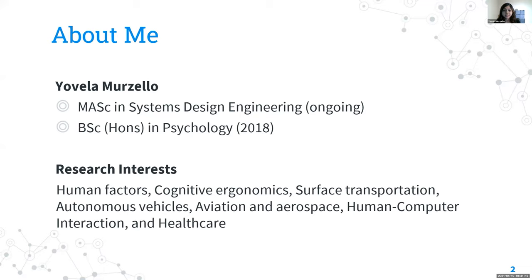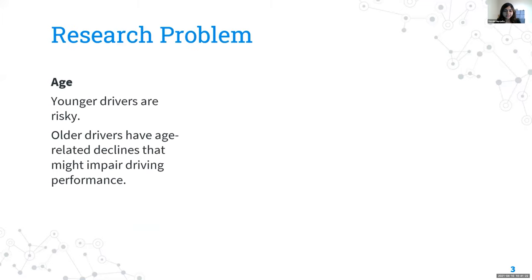Today I'm giving a short overview of my thesis examining age differences in situation awareness and takeover performance in a semi-autonomous vehicle simulator. Research shows there is high crash risk amongst young and elderly drivers. Young drivers tend to adopt risky driving styles — speeding, not maintaining stopping distances, and higher rates of distracted driving. Senior adults aged 65 and older are driving more miles than previous generations but have age-related declines in sensory, cognitive, and psychomotor abilities.